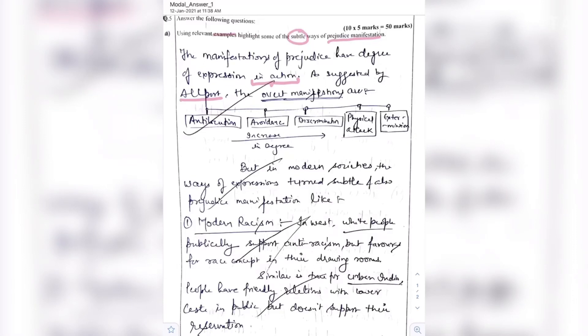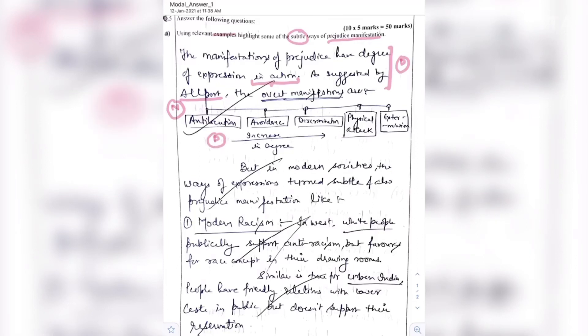I gave a brief regarding the overt manifestations suggested by Allport — from antilocution to avoidance to extermination — showing the increasing degree of manifestation. This question doesn't demand a direct definition, but I put down the explanation part of the concept. I also included a flowchart or diagram showing these stages, which can come under the diagram part of the answer.